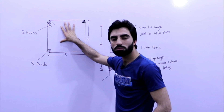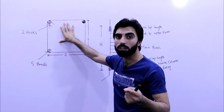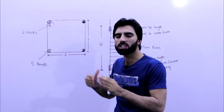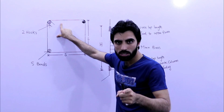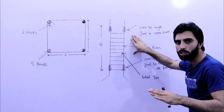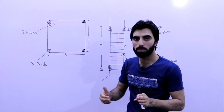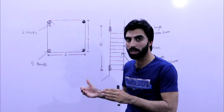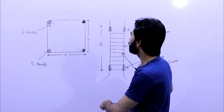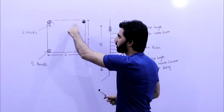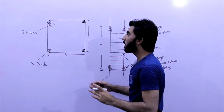Here you can see this is lateral ties — there isn't any concrete cover shown here, this is just the steel bar. This is the lateral ties for RCC column, and you can see this is the long section for RCC column. I will discuss hooks, bands, and all elements present in this diagram. These are all lateral ties.